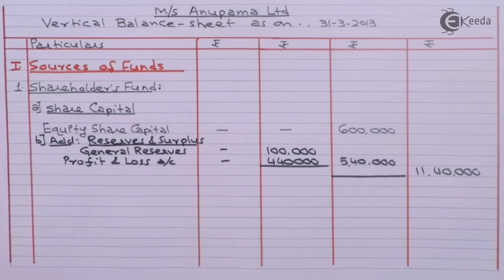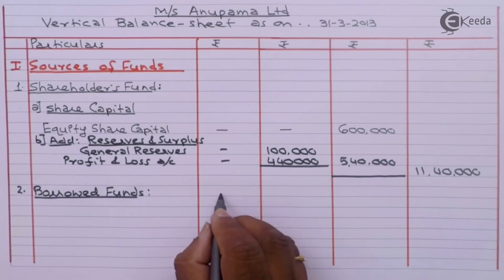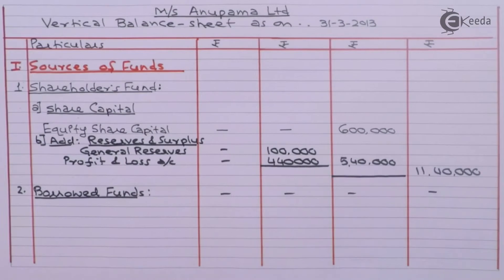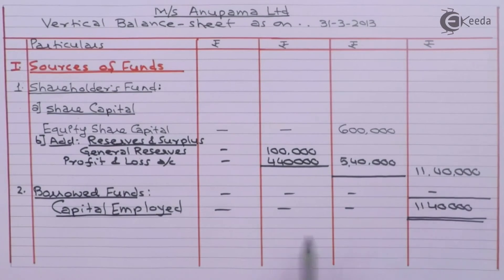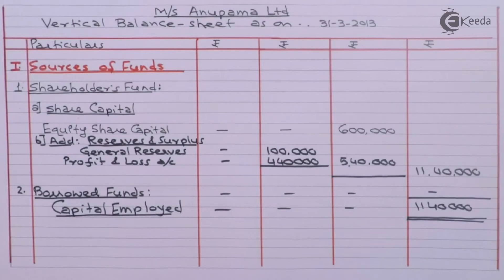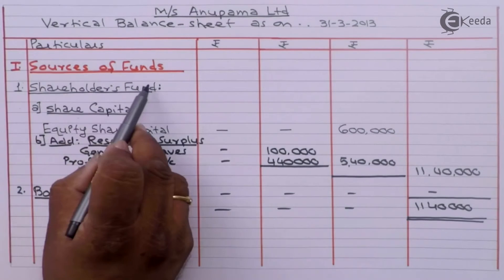To shareholders' fund we add borrowed funds. In this question there are no borrowed funds. So capital employed equals shareholders' fund: 11 lakhs 40,000. We have completed the first part of the balance sheet — sources of funds.